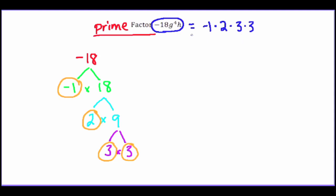Now I'm going to expand the variables. g to the power of 4 means that there are 4 g factors, and h leaves one h factor. So the prime factorization of negative 18g to the 4th h is: negative 1 times 2 times 3 times 3 times g times g times g times g times h.